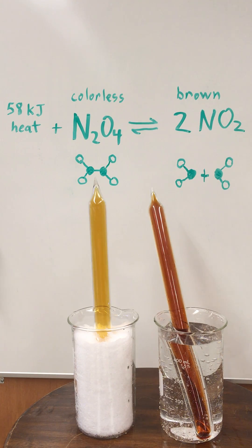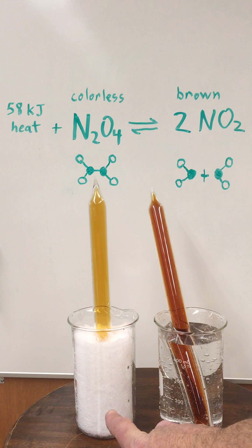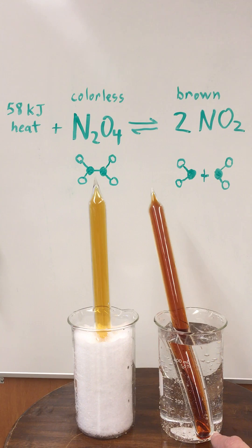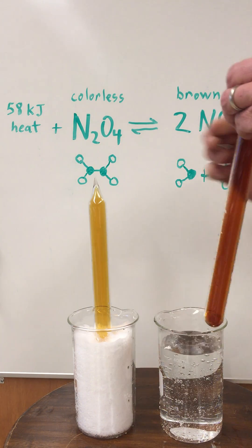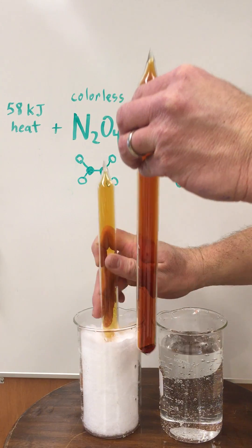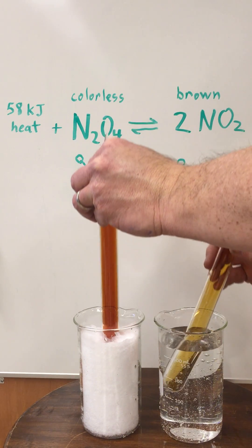Now what we have over here is this tube is in snow, so it's about freezing temperatures, and we have this tube in warm water. What I'm going to do is switch these tubes so hopefully we'll see some colors changing here.